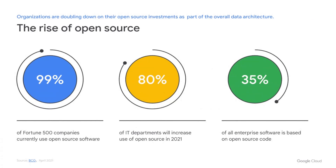As many of us realize, we are living in the golden age of open source, as it is now being pervasively used across enterprises, and their adoption is only accelerating. In fact, 99% of Fortune 500 companies use open source today, with 80% planning to further increase it in the next 12 months. As companies double down on their open source investments, they no longer see them as a separate corner of their data architecture.